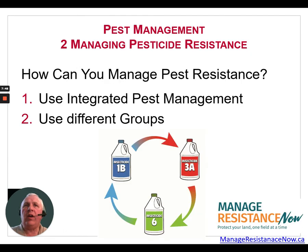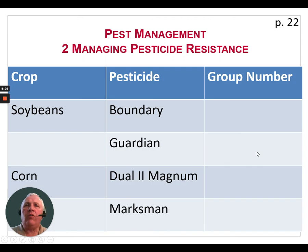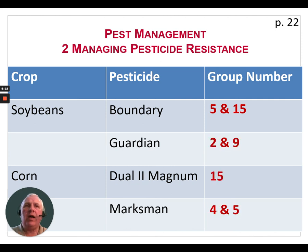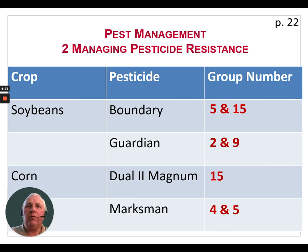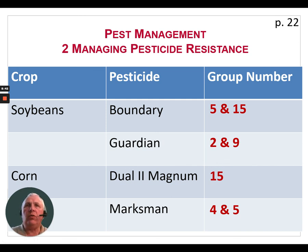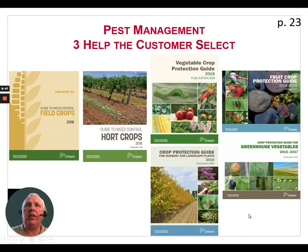How do we manage resistance? We need to use integrated pest management. When using herbicides, we need to rotate and use different chemical group families. A great exercise to do with your customers is to have them write down the crops they're growing, beside that the pesticides they're using, and then — using publications or labels — write down the group numbers. In this example, you can see there are various products, but they're still using some Group 5s and Group 15s in both crops. We have to use as many chemical families as possible to delay resistance and control resistant weeds.